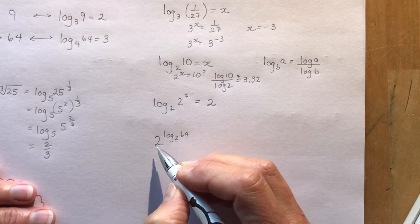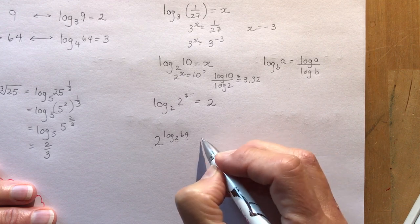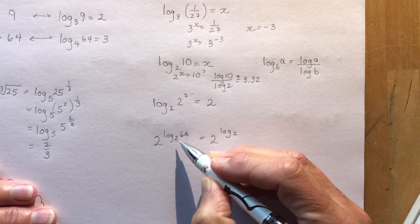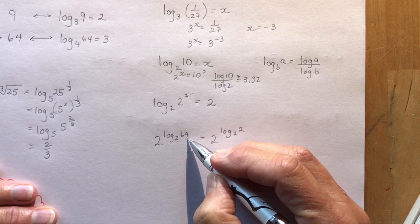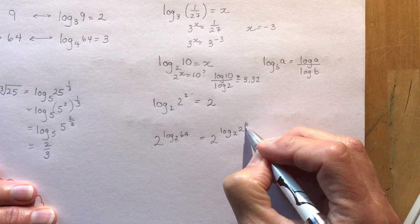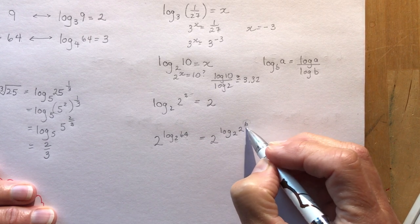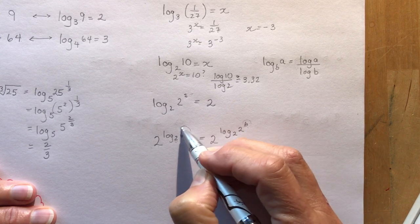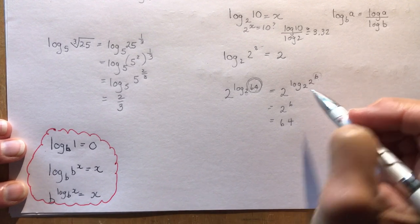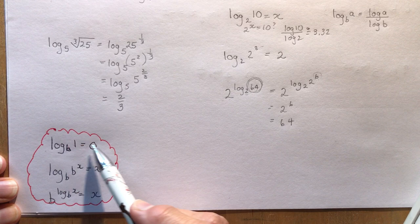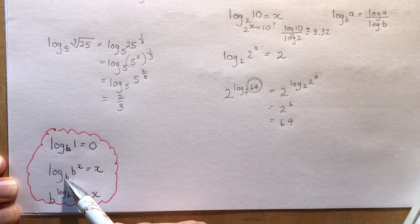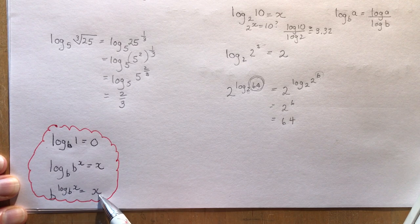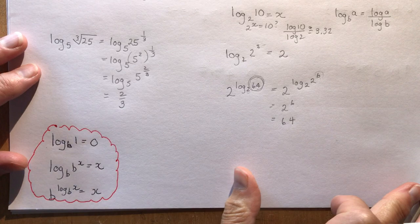Log base 2 of 64: I want to write 64 with a base of 2. Since 2 to the 5th is 32, 2 to the 6th is 64. What do I raise 2 to in order to get 2 to the 6th? That's 6. A couple of key rules to remember: log base b of 1 equals 0 (since b to the 0 is 1); log base b of b to the x equals x; and b to the log base b of x also equals x. These are basic rules to make your life easier.